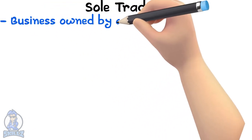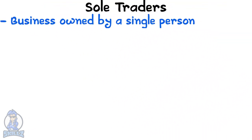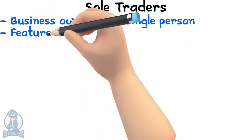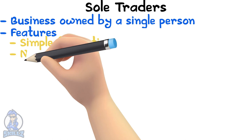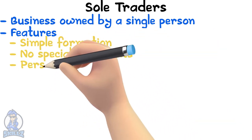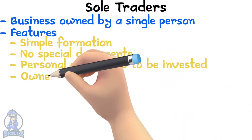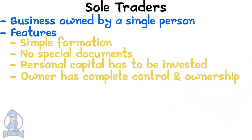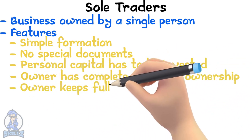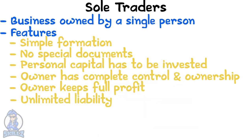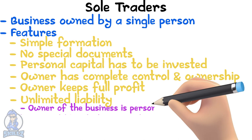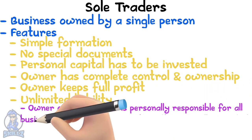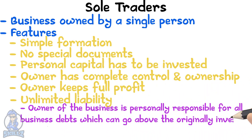Sole Traders. A sole trader is a business owned by a single person. It is the simplest commercial enterprise. Some features of sole traders are: simple formation, no special documents, personal capital has to be invested, owner has complete control and ownership, owner keeps the full profit, and they have unlimited liability. Unlimited liability means that the owner is personally responsible for all business debts, which can go above the amount originally invested.